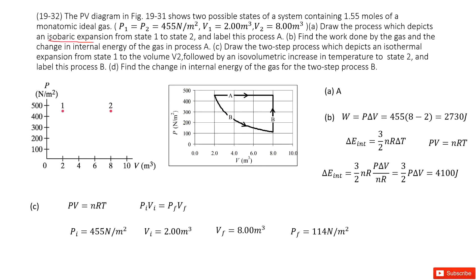Now question, what is isobaric expansion? The pressure is constant, right? So we just connect the pressure constant horizontal. Connect the 1 to 2 horizontal. This is called A. We are done.